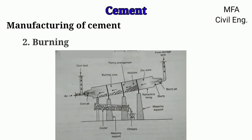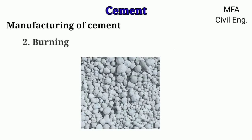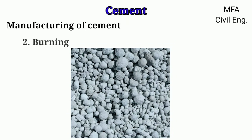The burning of the raw mix is carried out in a rotary kiln. The raw mix in the form of slurry is injected at the upper end of the kiln from the storage tank and brought to the dry zone. In the next section of the kiln, carbon dioxide from the slurry is evaporated and nodules are formed. These nodules are gradually rolled down through a zone and come to the burning zone where the temperature is about 1400 to 1500 degrees Celsius. The calcined product is formed and the nodules are converted into small hard dark greenish-blue balls called clinker.